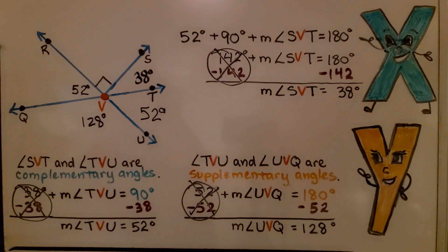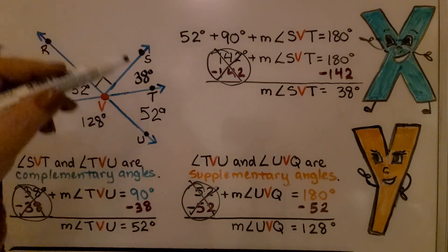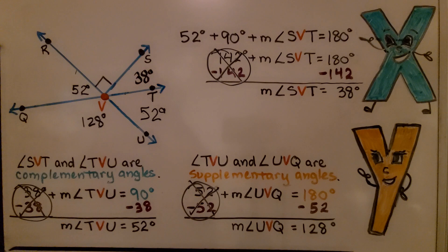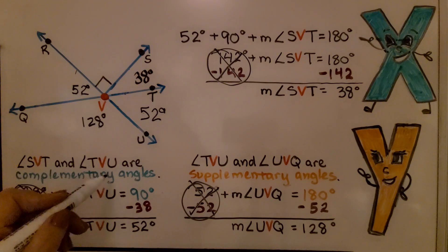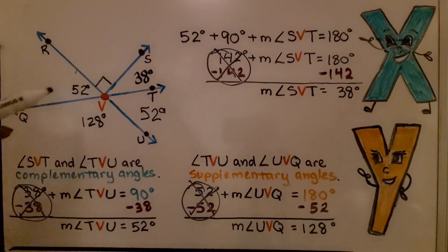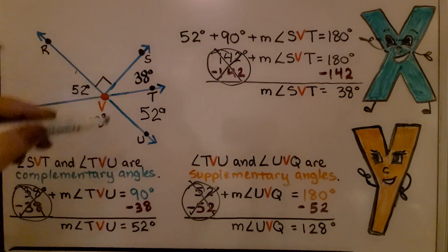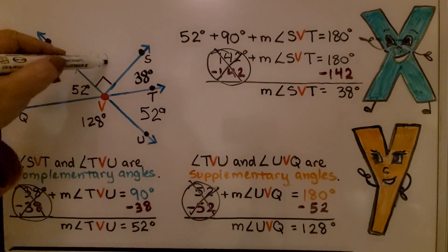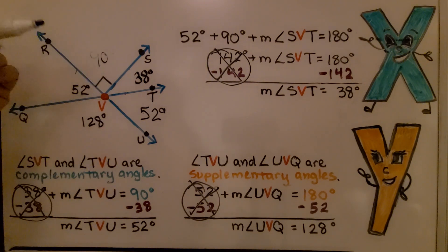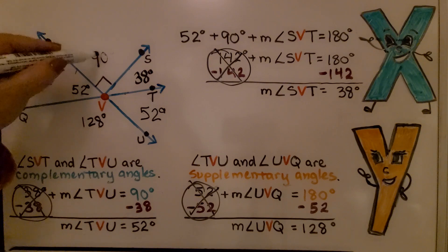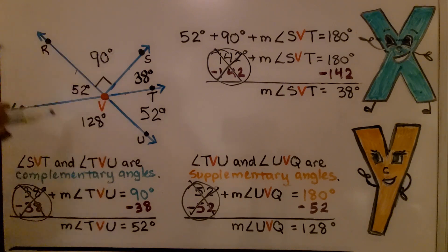By using our knowledge of vertical angles, straight angles, complementary angles, and supplementary angles, we were able to find all the angle measures going around this diagram. We know that angle is 90 degrees because of the square box, and now we know all the angle measures going all the way around.